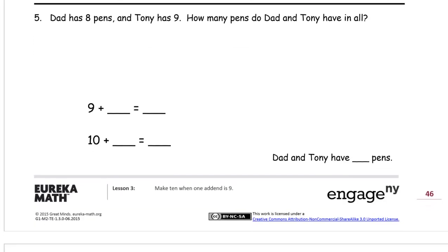Dad has eight pens. One, two, three, four, five, six, seven, eight. And Tony has nine. One, two, three, four, five, six, seven, eight, nine. These are dad's pens, D, and these are Tony's pens, T.